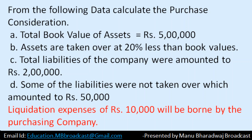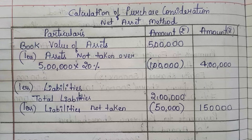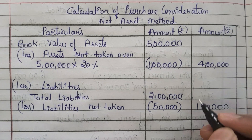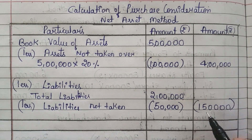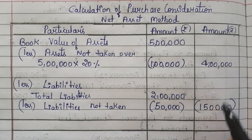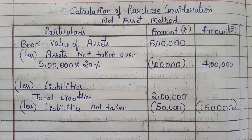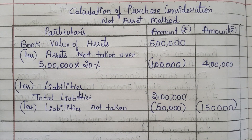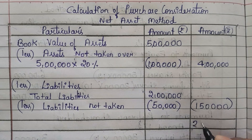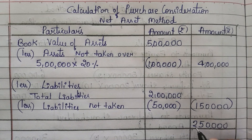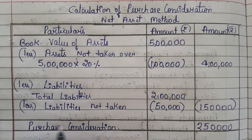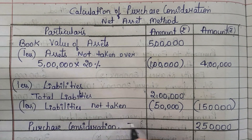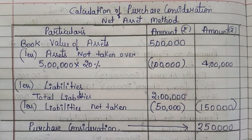Now deduct 1 lakh 50,000 from 4 lakh. When you deduct 1 lakh 50,000 from 4 lakh, you get the answer as 2 lakh 50,000. This 2 lakh 50,000 is nothing but our purchase consideration.